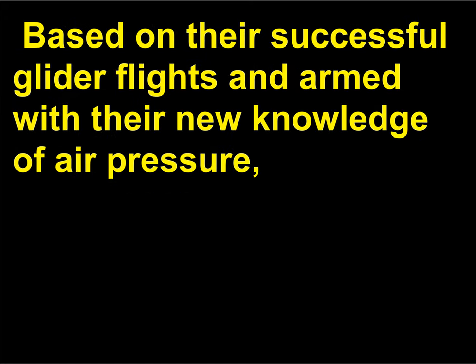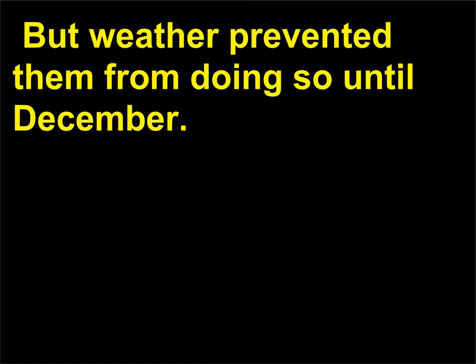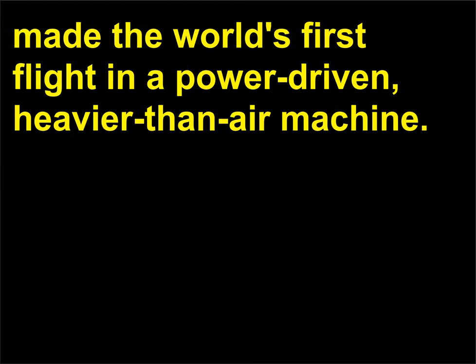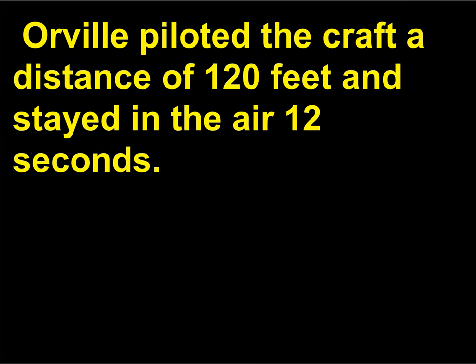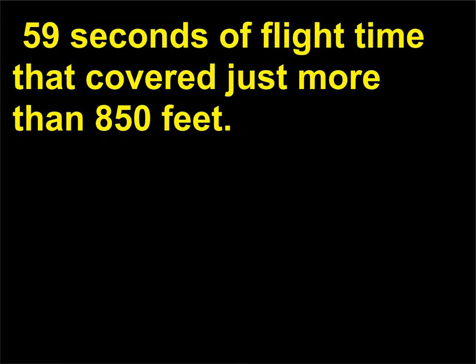Based on their successful glider flights and armed with their new knowledge of air pressure, Orville and Wilbur Wright designed and built an airplane. They returned to Kitty Hawk in September 1903 to try the craft, but weather prevented them from doing so until December. It was days before Christmas when, on December 17, 1903, the Wright brothers made the world's first flight in a power-driven, heavier-than-air machine. Orville piloted the craft a distance of 120 feet and stayed in the air 12 seconds. They made a total of four flights that day, and Wilbur made the longest — 59 seconds of flight time that covered just more than 850 feet.